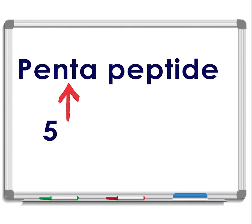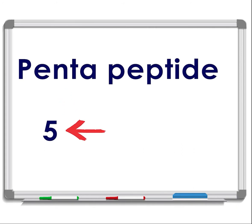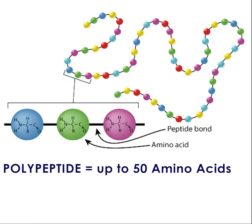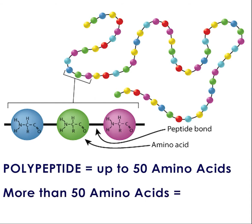You will see prefixes like di, tri, and tetra, which describe how many amino acids make up that particular peptide. A polypeptide is a longer, continuous, unbranched peptide chain of up to 50 amino acids. A polypeptide that contains more than 50 amino acids becomes — wait for it — a protein.